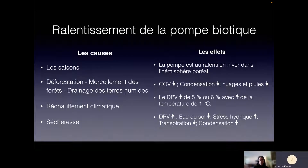Je reviens sur la première diapositive : les causes de ralentissement de la pompe biotique, c'est les saisons, les arbres étant beaucoup moins actifs en hiver dans l'hémisphère boréal. L'aspect déforestation, morcellement et terres agricoles a directement un effet : ça diminue la quantité d'aérosols produits dans l'air, parce que s'il y a moins de forêts, il y a moins de composés organiques volatils. Ça diminue le phénomène de condensation autour de ces petits aimants qui attirent l'eau, donc ça diminue la formation de nuages et les précipitations.